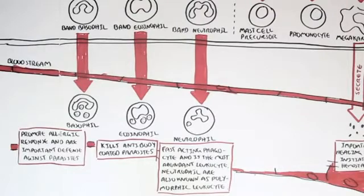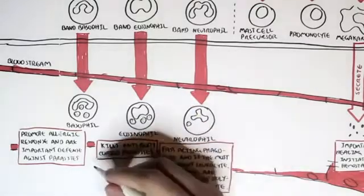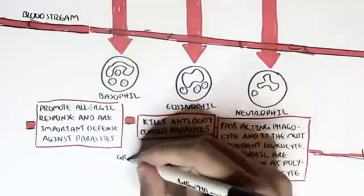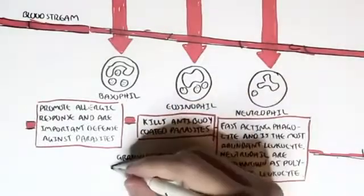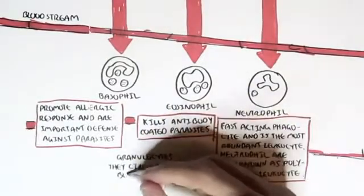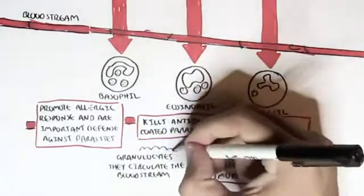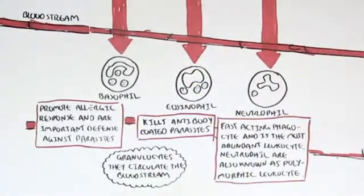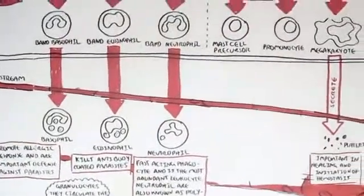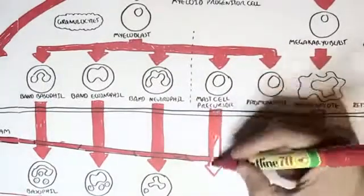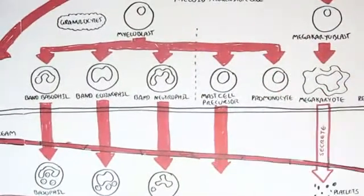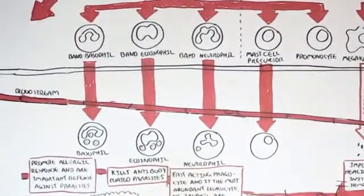These are the three granulocytes. When in the bone marrow their granules are not present yet, but once they're in the bloodstream they have these granules and they're ready. These granulocytes typically circulate through the bloodstream and wait for a particular response or chemicals to signal them to go to an area where they are needed. The mast cell precursor, when it leaves the bone marrow, will still be a mast cell precursor, but it will become a mast cell once it enters tissues.